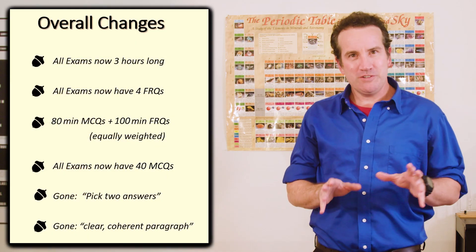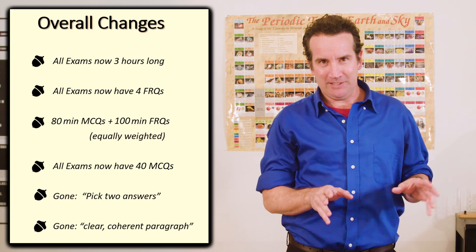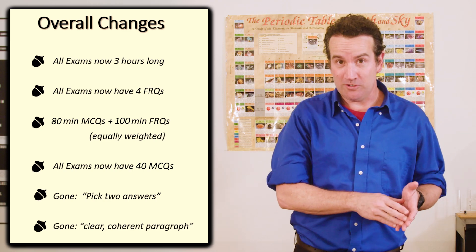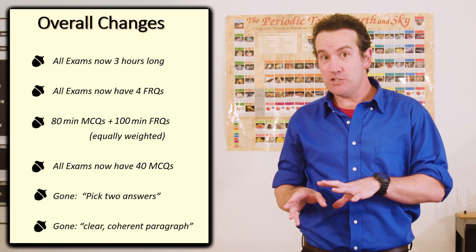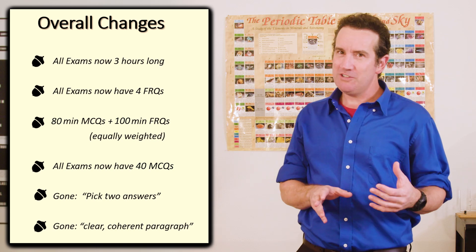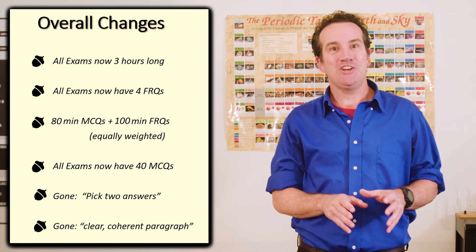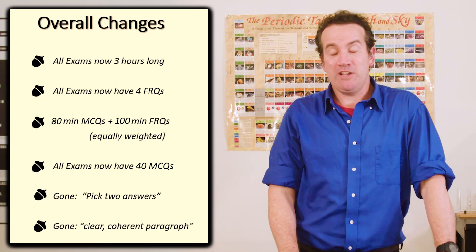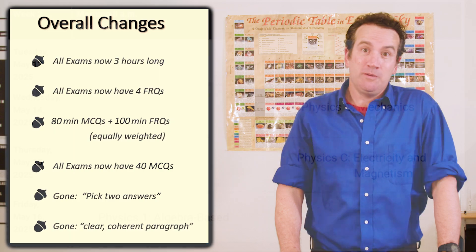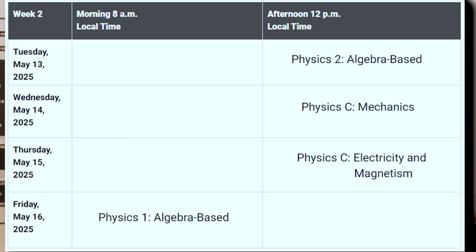All four of the AP Physics exams are now the same length, that is three hours long. It's a big change for the C exams, which were previously 90 minutes each, but not much of a change for AP Physics 1 and 2. Also, all four will be on different days.